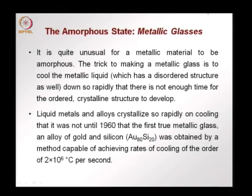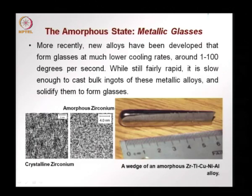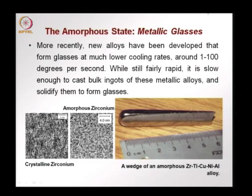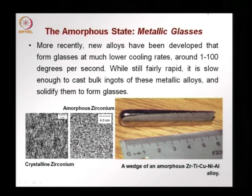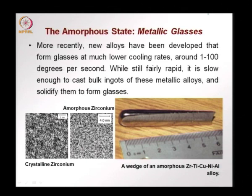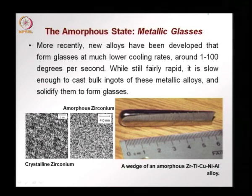The first metallic glass was obtained by very rapid cooling on the order of 2 million degrees Celsius per second — a very fast cooling rate. More recently, new alloys have been developed that become glasses at much lower cooling rates, only in the range of 1 to 100 degrees per second.